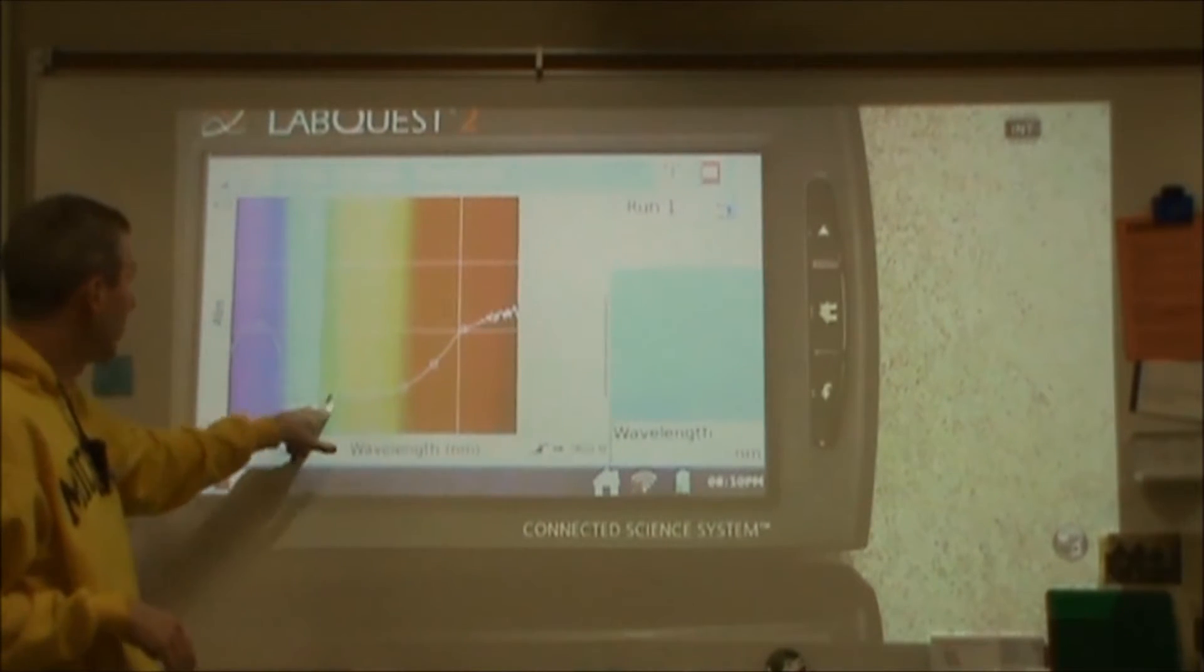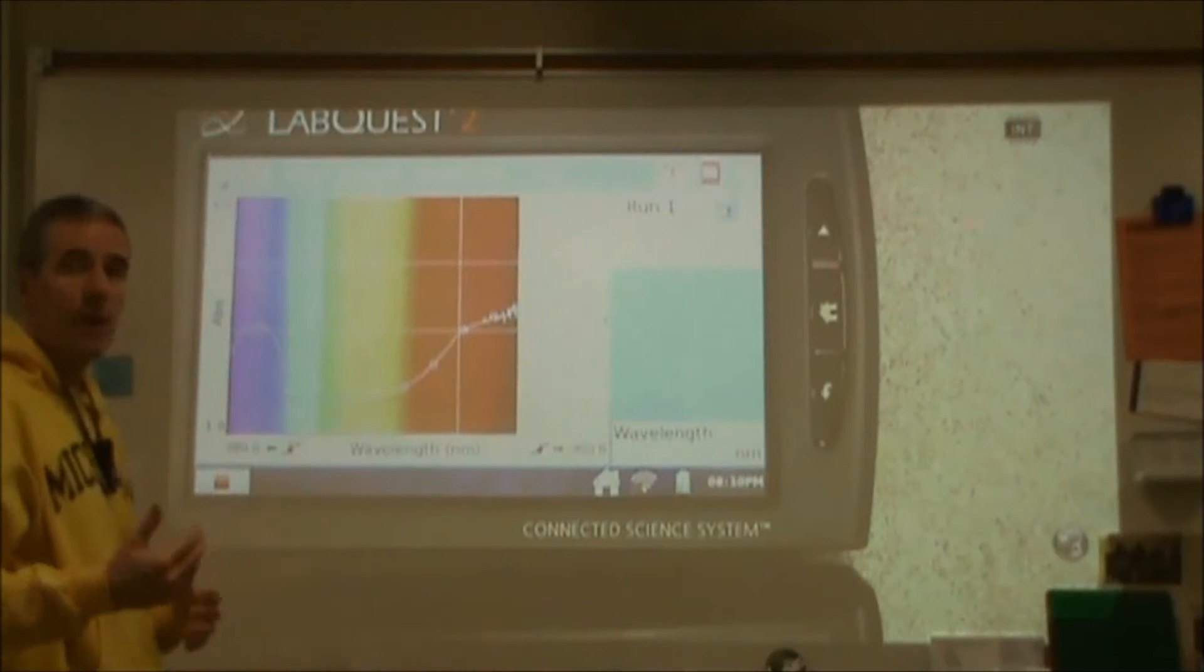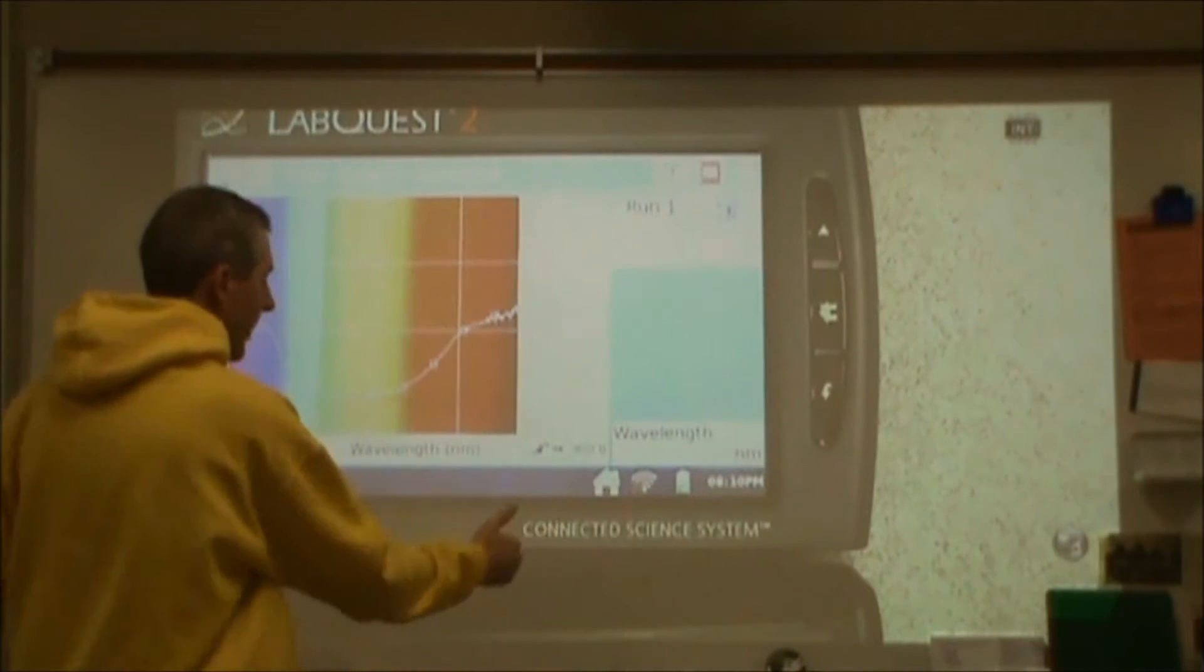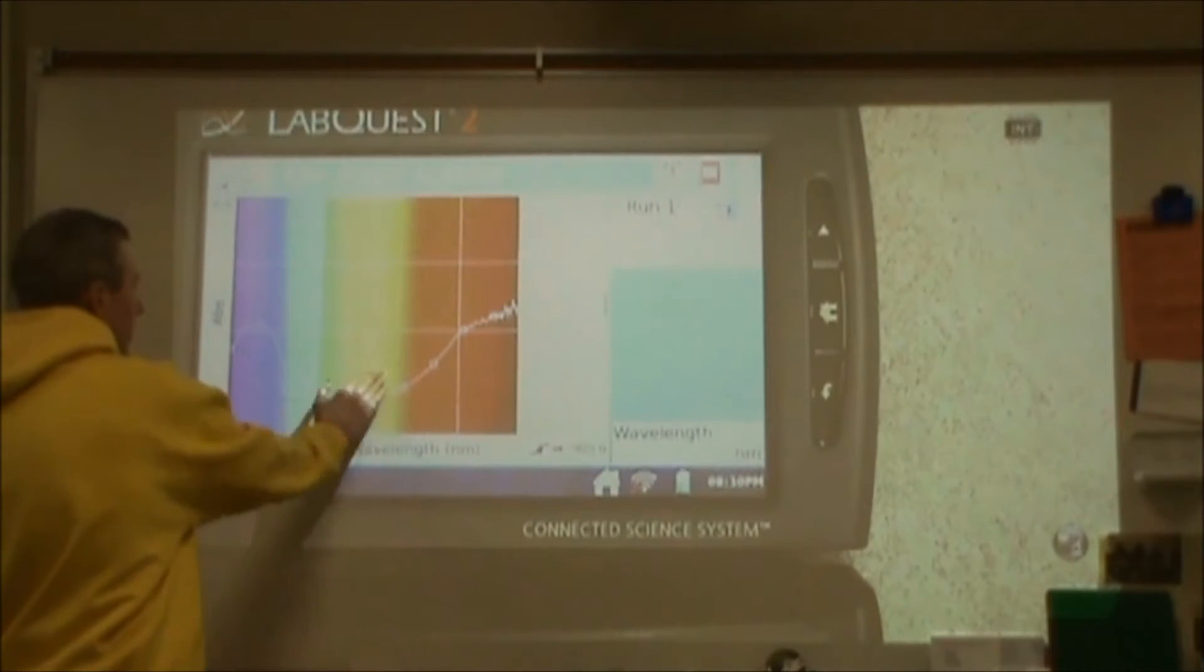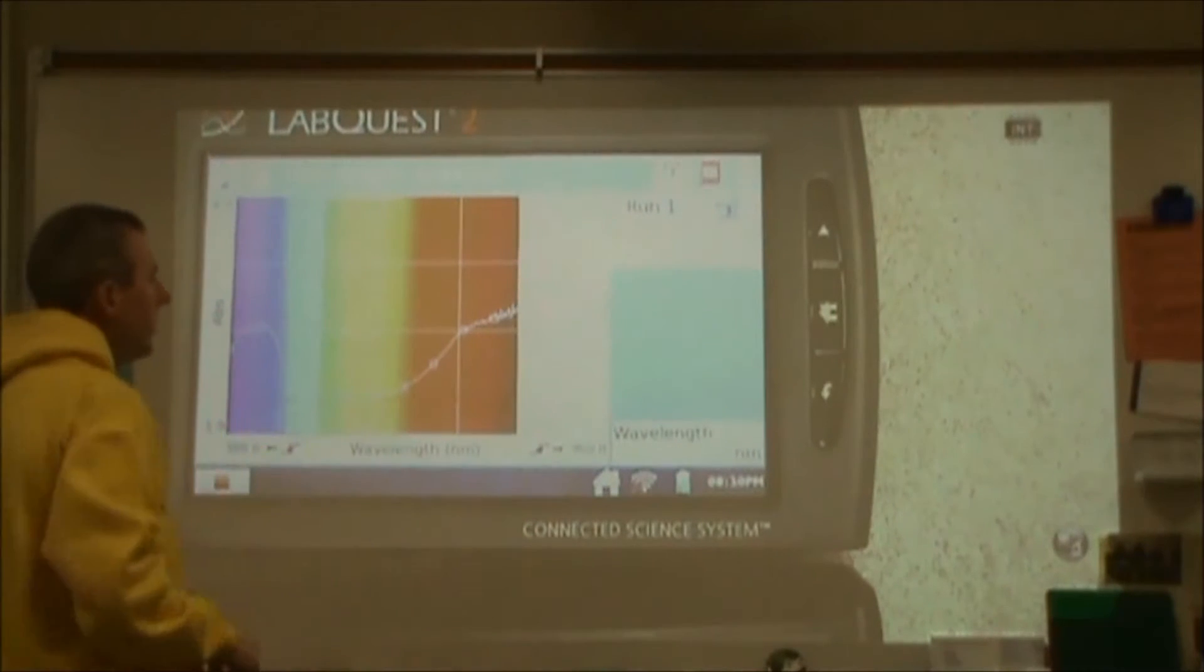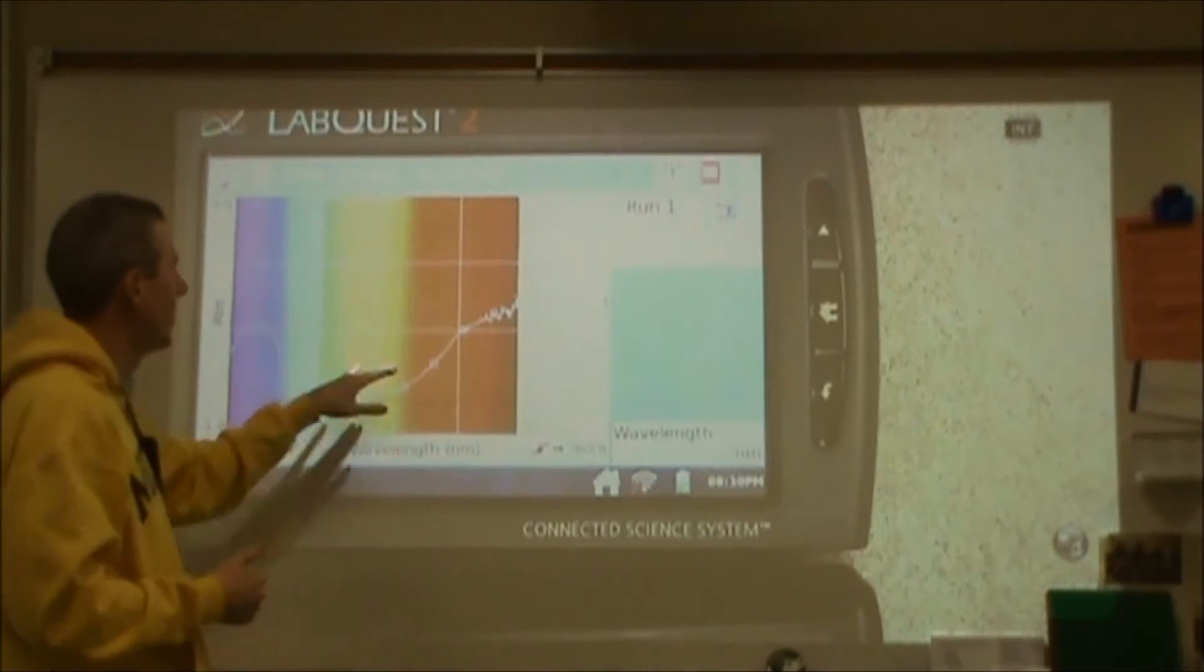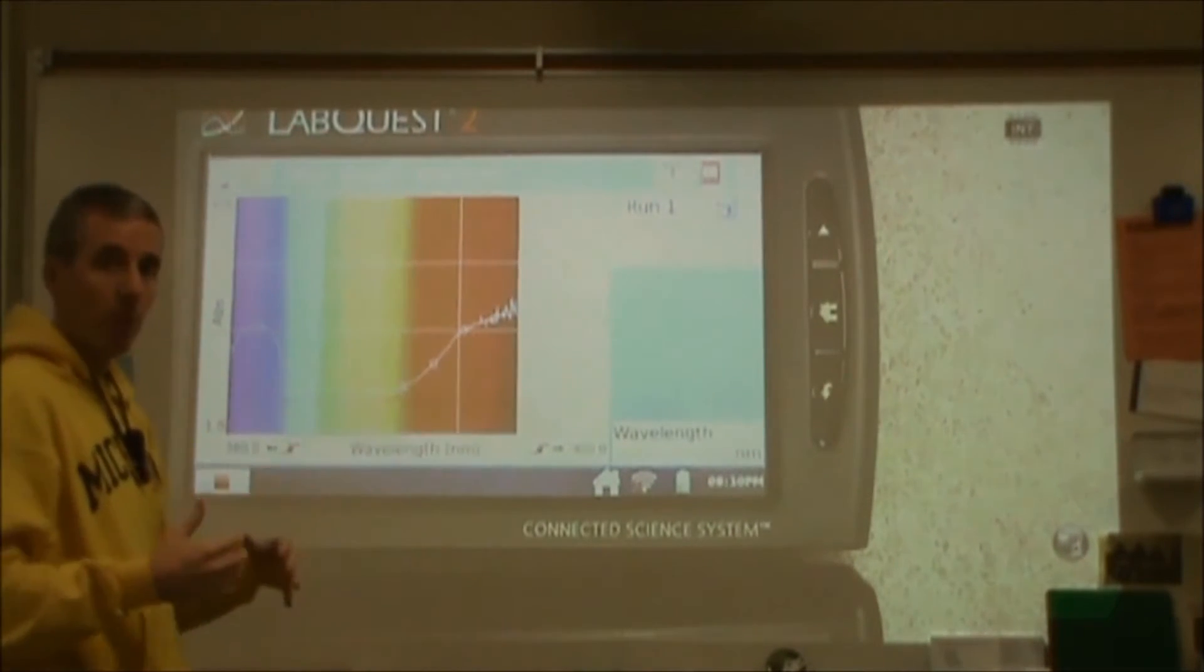Currently the green section is not absorbing, which means that this machine is sending white light through the sample. The greens and the yellows, a little bit of the blue, maybe a little bit of the orange, are passing through that sample, but the purple and the dark blue and the orange and the red are getting absorbed.